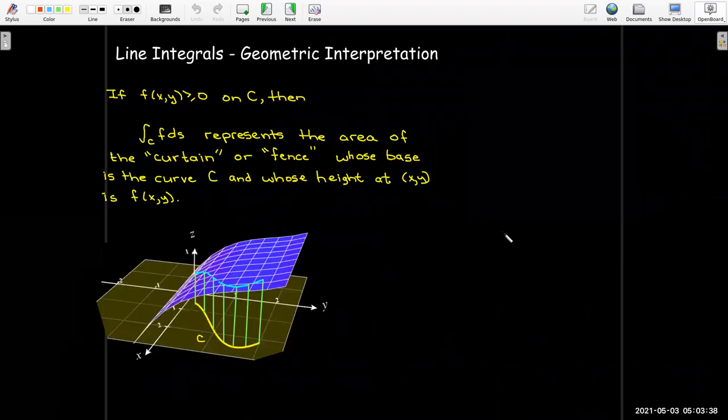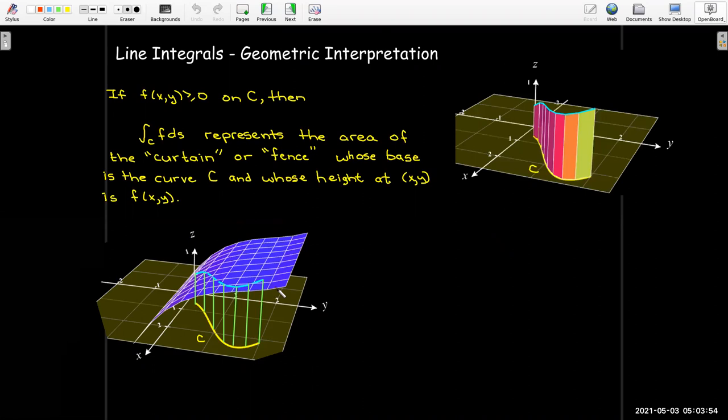Again, we started off by saying, what does this line integral represent? Well, if the surface is above the xy plane, it tells us the area of this fence or curtain, which would look more like a fence if I remove the surface from the picture.